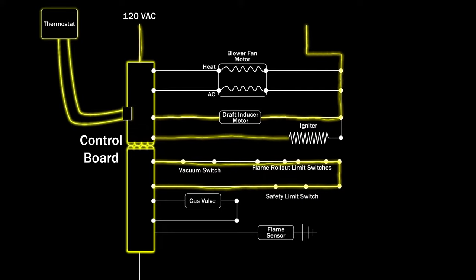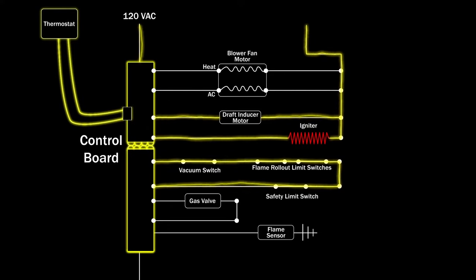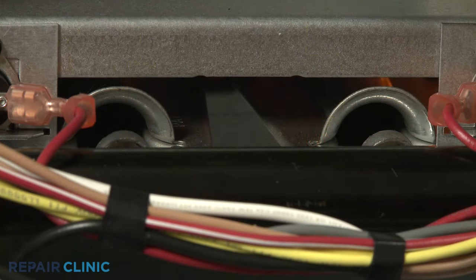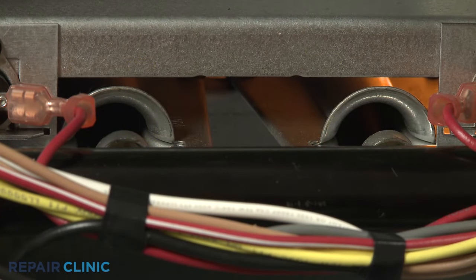The glow bar style igniter will receive 120 volts from the furnace control board, causing it to become hot enough to ignite the gas supply.